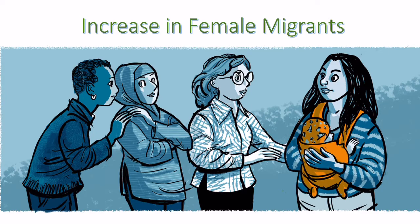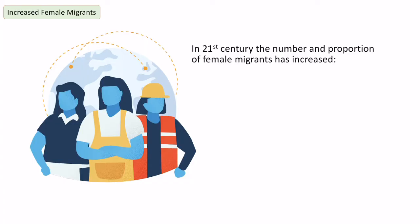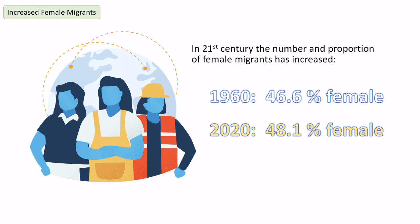The first area I'm going to cover is an increase in female migrants. In the 21st century we've seen not only the number but the proportion of overall migrants increase for female migrants. In the 1960s it was about 46.6%, but by 2020 that's nearly 48.1%, so that's getting close to the same proportions as male migrants.